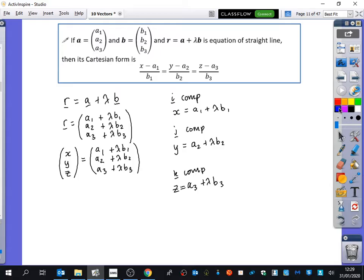Now, if I make lambda the subject for all of them, that's the one thing they've all got in common. So if I make lambda the subject for this, I get x minus a1 over b1 equals lambda. Similarly, y minus a2 over b2 equals lambda. And z minus a3 over b3 equals lambda.